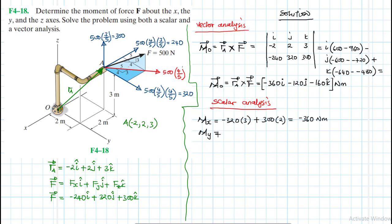For My, the forces that will cause a moment about the y-axis are the forces in the x and in the z. The x-direction force (240) causes a negative moment by lever arm 3, and the z-direction force (300) causes a positive moment by lever arm 2. Summing algebraically gives My equal to minus 120 newton meters.